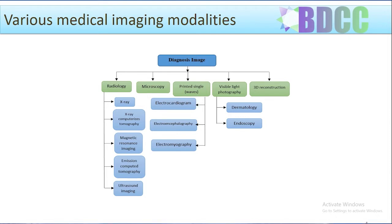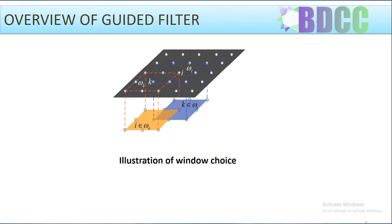We chose guided filters for extracting important information from detailed layers. This is an edge-preserving filter which provides the most accurate image details. The outcome of filtering is a linear transform of a guidance image that is applied locally. It provides reduced ringing and blurring effects. It is a non-iterative method with less computing overhead, and is one of the quickest edge-preserving filters.